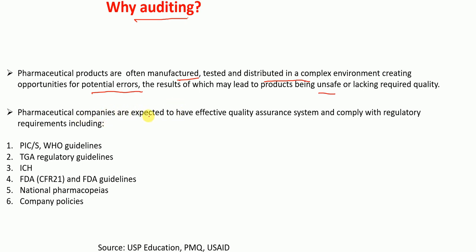Therefore, pharmaceutical companies are expected to have effective quality assurance systems and they should comply with regulatory requirements including PICS, WHO guidelines, TCA regulatory guidelines, ICS guidelines, FDA CFR 21 and FDA guidelines, national pharmacopeias, and company policies.